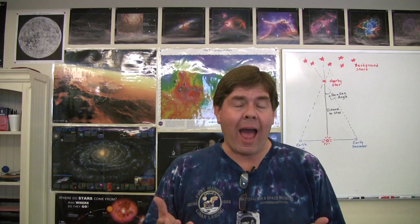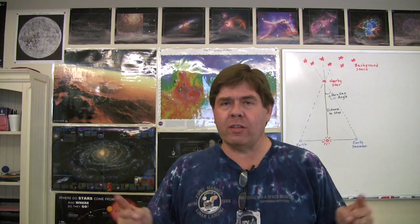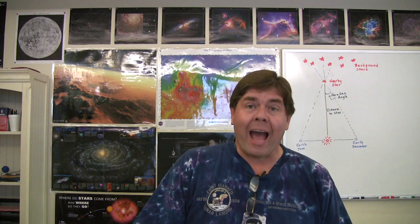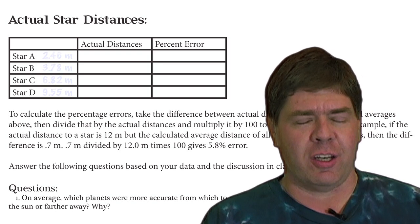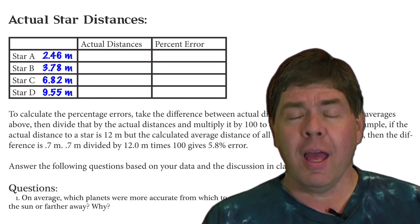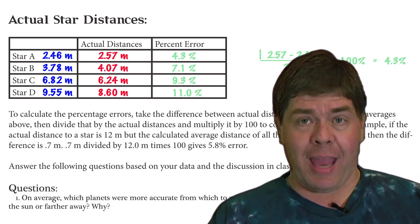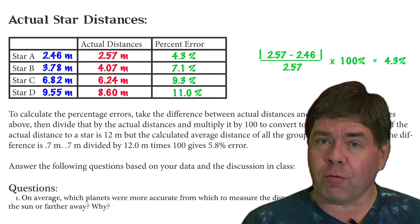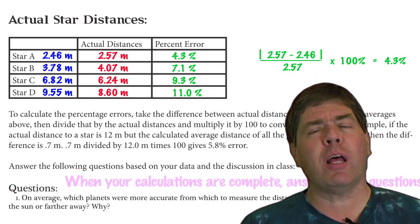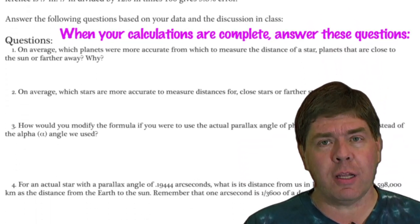Now find the average distance to the star as taken from each one of the six planets. Once you are done, your teacher will tell you the actual distances from the sun to each of the stars. To do an error calculation, take your average distance to that star and subtract it from the actual distance your teacher gives you, then divide that difference by the actual distance and convert it into a percentage. That will tell you how far off you were as a percentage of the actual distance. Make sure you write all of your calculations down — you should see something pretty interesting.